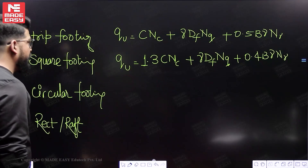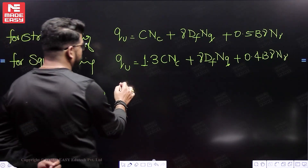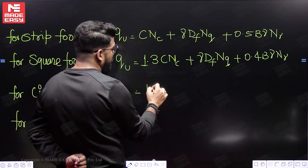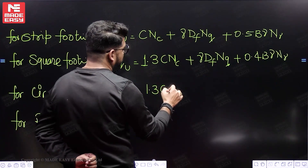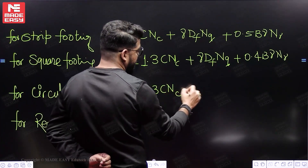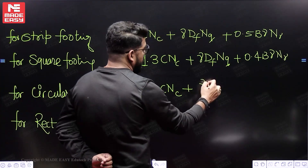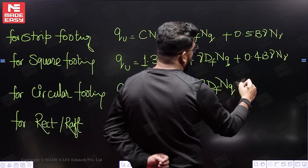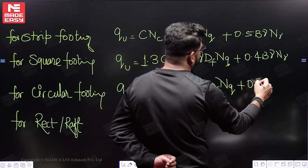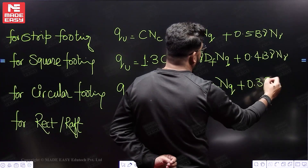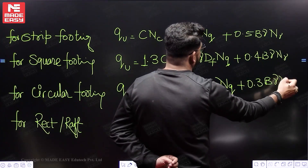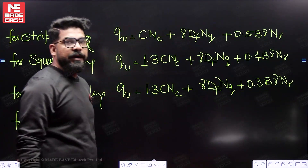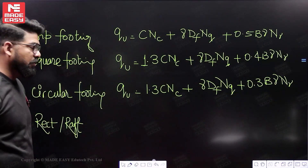When we talk about circular footing, the equation changes to: QU = 1.3·C·NC + γ·Df·NQ + 0.3·B·γ·Nγ, where B is the diameter of the circular footing.